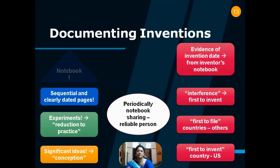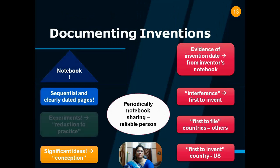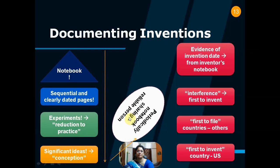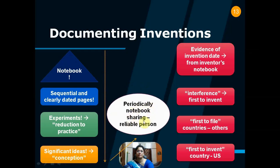For documenting inventions, first you keep a notebook. Keep the pages sequential and clearly dated. Write down your experiments, especially the ones showing structure of the invention and how to make the invention — this will produce reduction to practice. Also write down significant ideas that will lead to conception. Periodically, show your notebook to someone else in the lab who is not an inventor but who has an obligation of confidentiality and can understand what you are telling them. Have that witness sign and date the pages and indicate that they have read and understood the content.